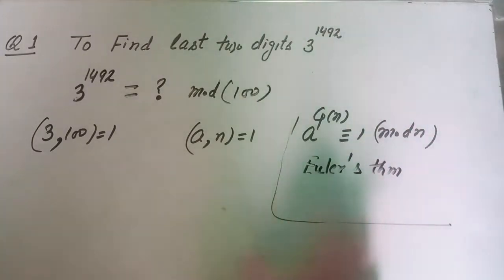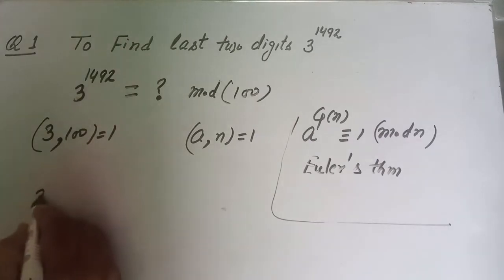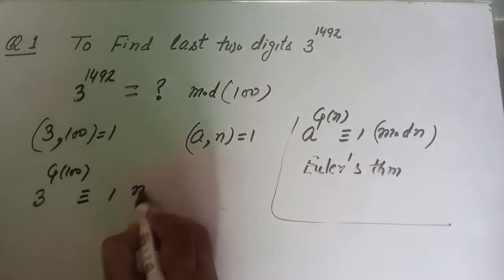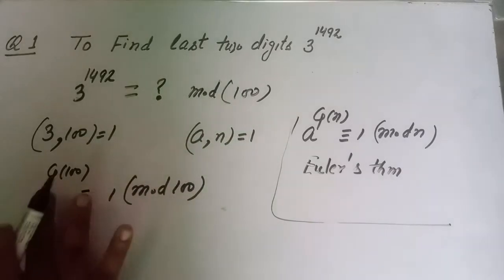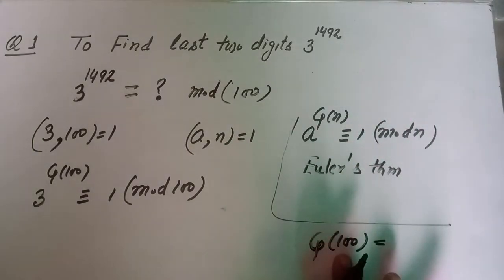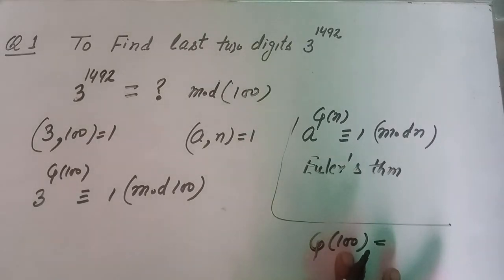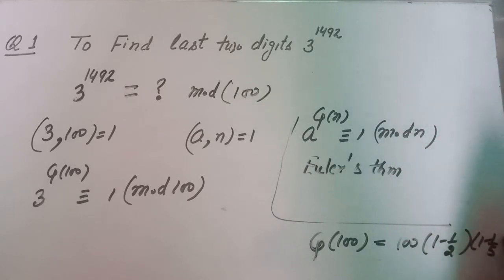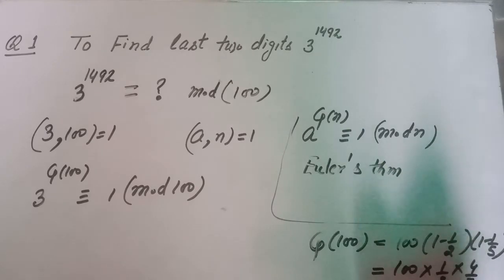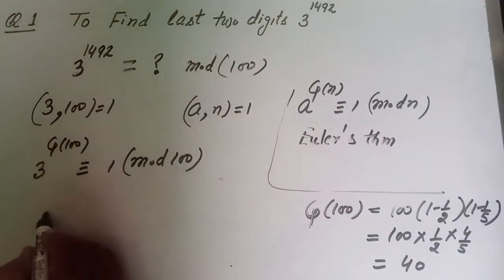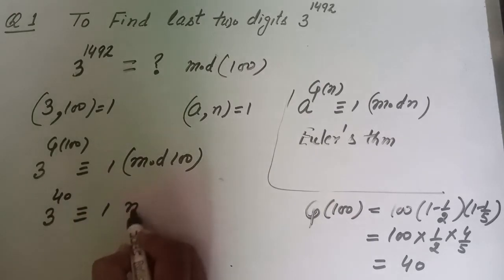By Euler's theorem, 3 raised to power φ(100) is congruent to 1 mod 100. To calculate φ(100): the prime divisors of 100 are 2 and 5, so φ(100) = 100 × (1 − 1/2) × (1 − 1/5) = 100 × 1/2 × 4/5 = 40. Therefore, 3^40 ≡ 1 mod 100.